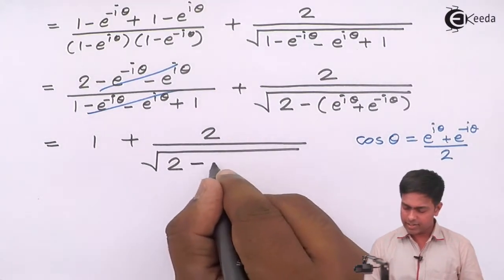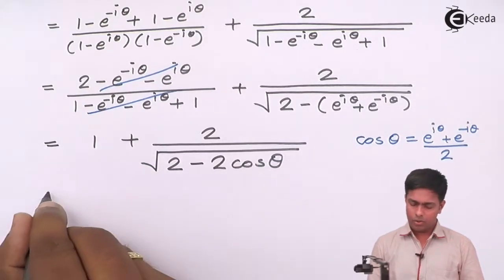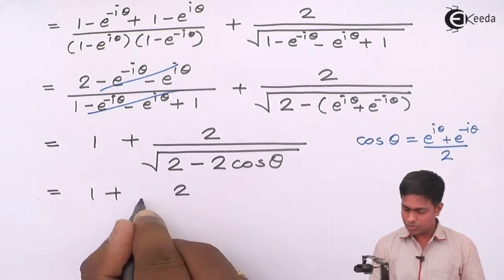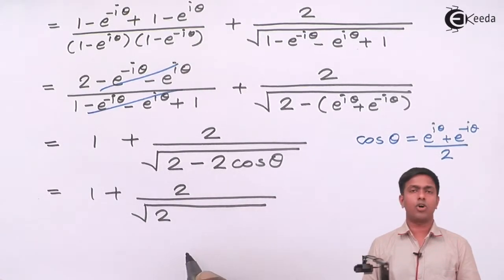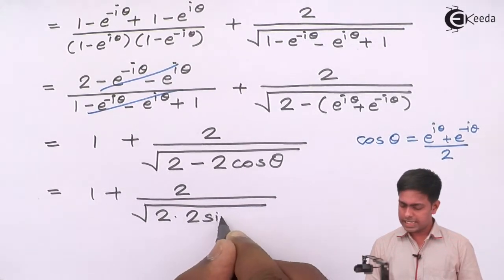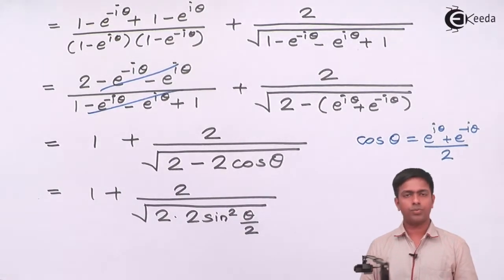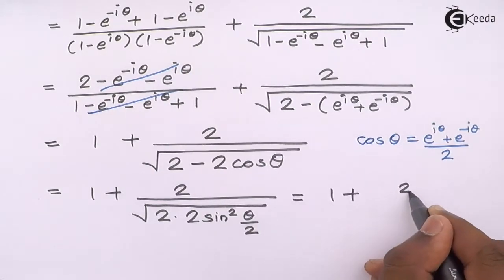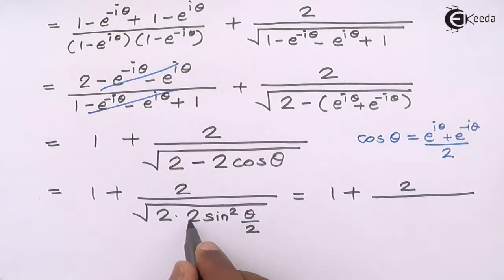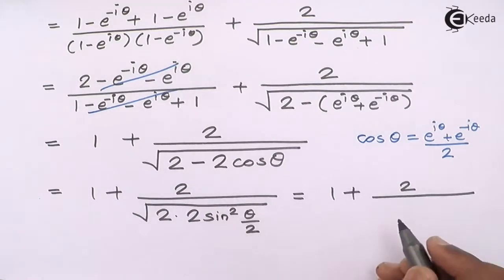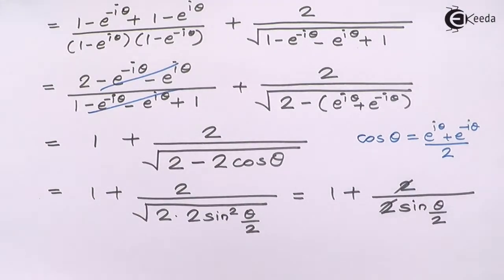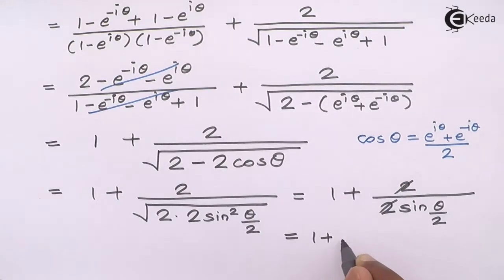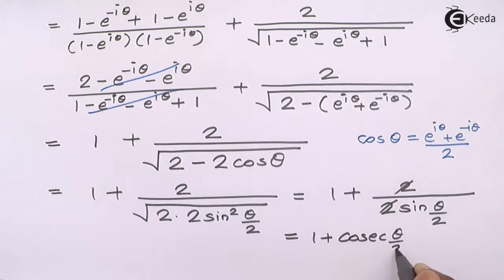Substituting, the expression inside the square root becomes 2 - 2 cos θ = 2(1 - cos θ). Using the identity 1 - cos θ = 2 sin²(θ/2), this becomes 4 sin²(θ/2). So the denominator is √(4 sin²(θ/2)) = 2 sin(θ/2), and the 2's cancel.